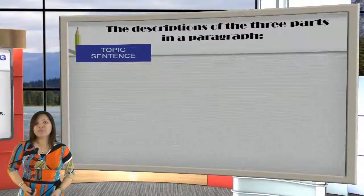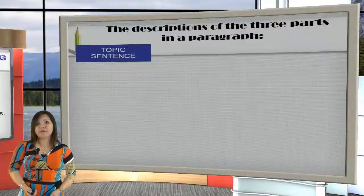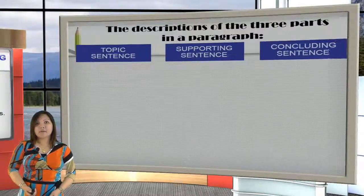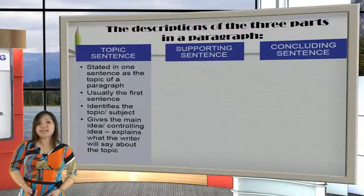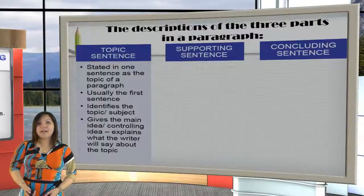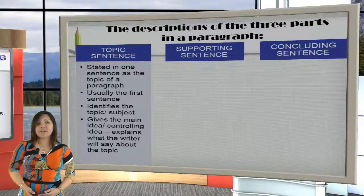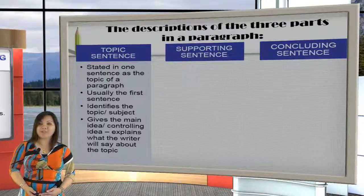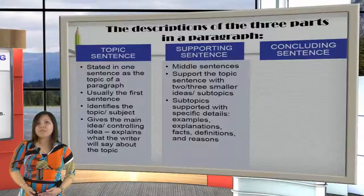This is the description of the three parts in a paragraph. First of all, topic sentence. A topic sentence is stated in one sentence as the topic of a paragraph — it is usually the first sentence. It identifies the topic or subject, and it gives the main idea or controlling idea, which explains what the writer will say about the topic.